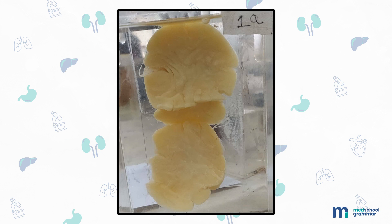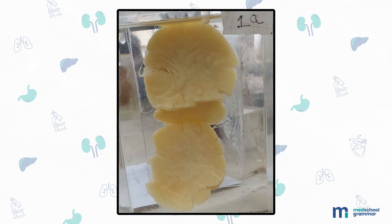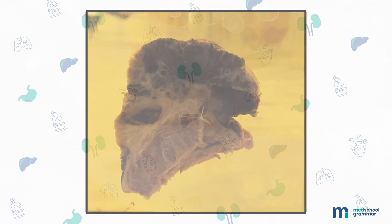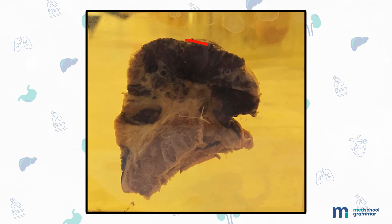Next we have a formalin-fixed irregular mass measuring 6 by 4 by 2 centimeters. External surface is yellowish in color; a thin capsule is present with a few dilated veins. The cut surface is solid and yellowish in color. Diagnosis: lipoma.